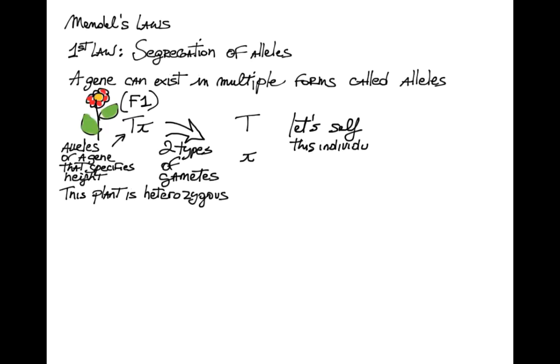When that happens, eggs that are either big T or little t are fertilized by sperms that are also either big T or little t. This process can be visualized by drawing a two by two square whose compartments are filled with the appropriate gametic genotypes.